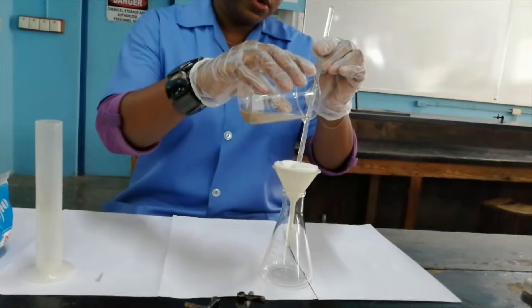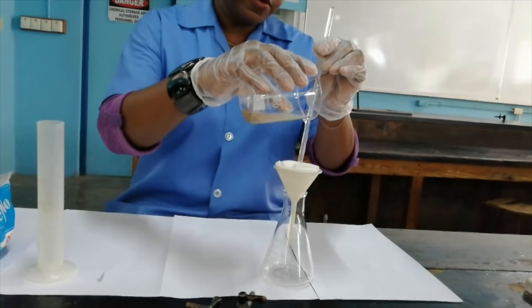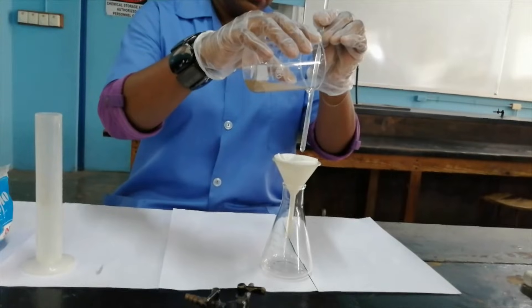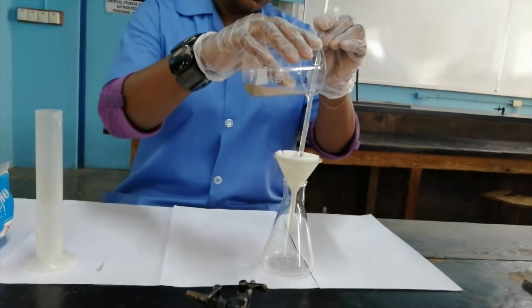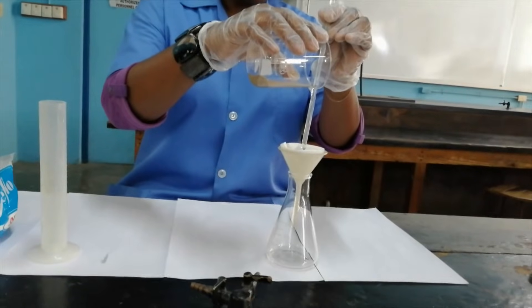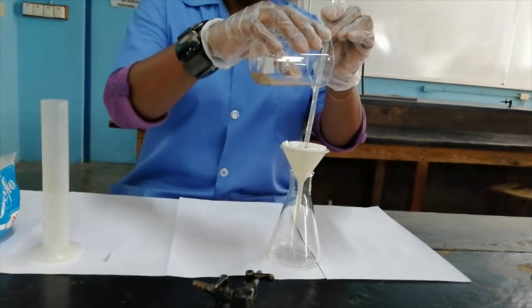What I'm doing now causes a more controlled flow, so I'm directing the flow of the liquid into the filter paper, which is of course inserted in the funnel.